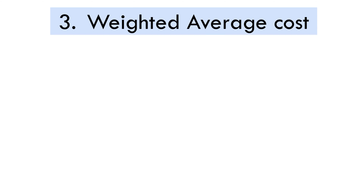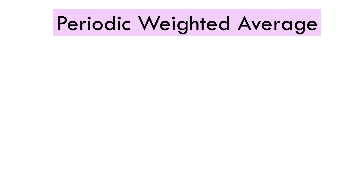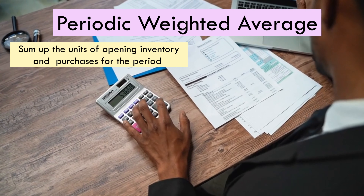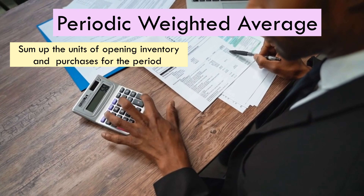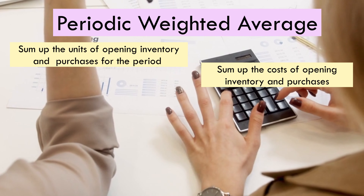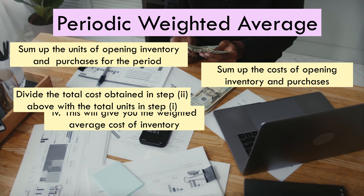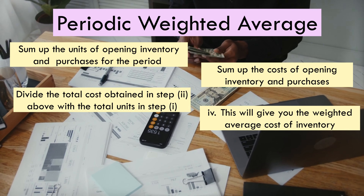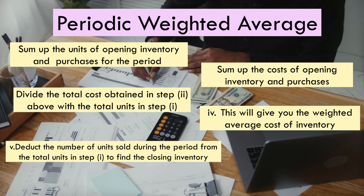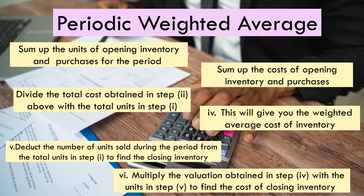Moving on to weighted average cost. This can take the form of periodic weighted average and perpetual weighted average. When it comes to periodic weighted average, the calculation is done at the end of the period. The cost of inventory is determined as follows: sum up the units of opening inventory and purchases for the whole period; then sum up the costs of opening inventory and purchases; divide the total cost by the total units to get the weighted average cost. From there, deduct the number of units sold during the period from the total units, which gives you the closing inventory. The value of closing inventory is then determined by multiplying the average unit cost by the number of units of closing inventory.